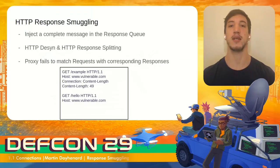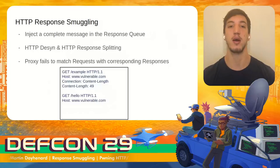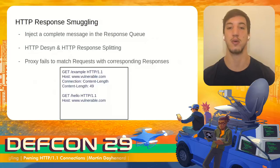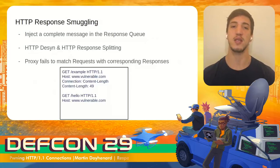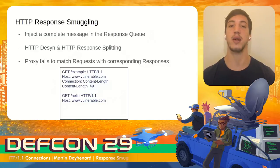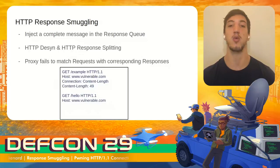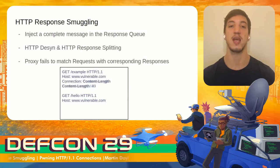By now, all attacks rely on injecting a prefix in the request queue of a persistent connection. However, exploiting this might not be as trivial as we would like — there are many prerequisites. But what if instead of placing focus on the request queue, we look at attacks affecting the response queue? With this in mind, I started thinking about what would happen if, instead of injecting a prefix for the next message, we smuggled a complete request that would alone produce an extra response.